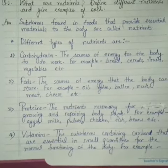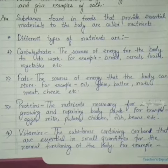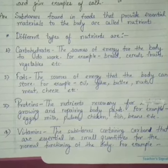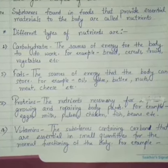Proteins — nutrients necessary for growing and repairing body parts. Examples: eggs, milk, pulses, chicken, fish, beans, etc.